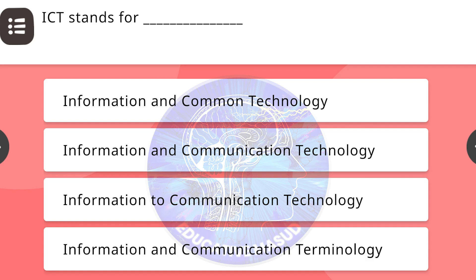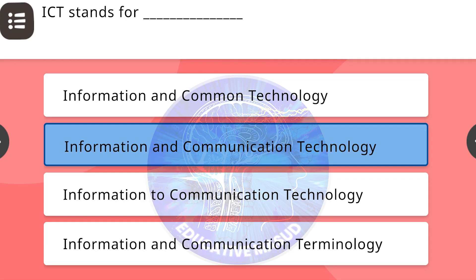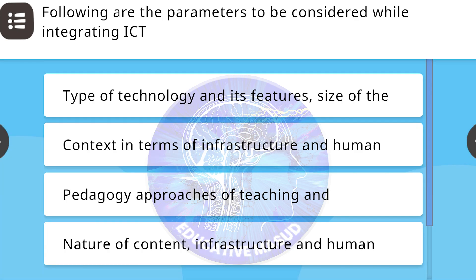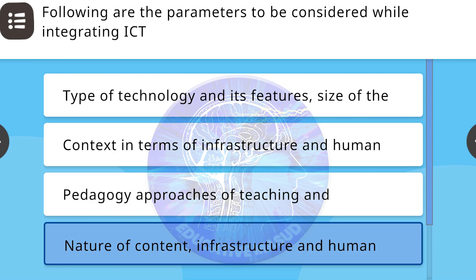ICT stands for? Correct answer is Information and Communication Technology. Next question: Following are the parameters to be considered while integrating ICT. Correct answer is: nature of content, infrastructure, and human.